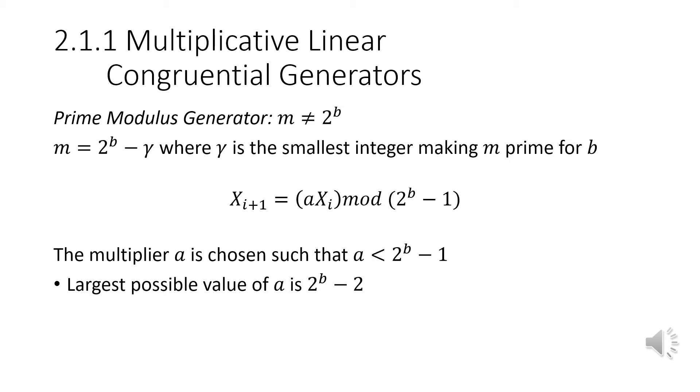So in this case, if we assume that lambda equals one, we have multiplier A that must be chosen such that A is less than two to the B minus one. So the largest possible value of A is two to the B minus two.